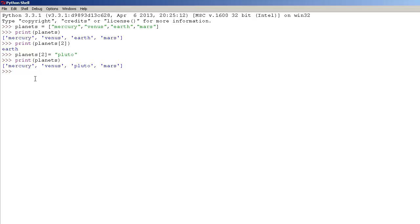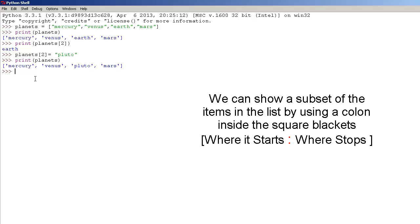We can also show a subset of the items in the list by using a colon. Type the print function, and inside the parenthesis type planets with square brackets. Inside the square brackets use a colon — type 0 which is Mercury, and let's stop at 2. Press enter and as you can see it shows a subset of the list, starting from 0 and stopping at 2, so it took from Mercury to Venus.